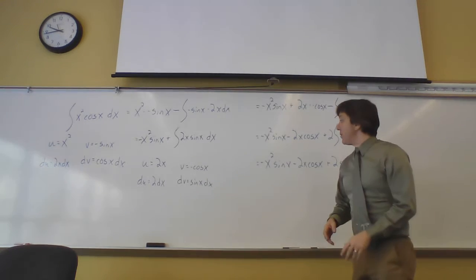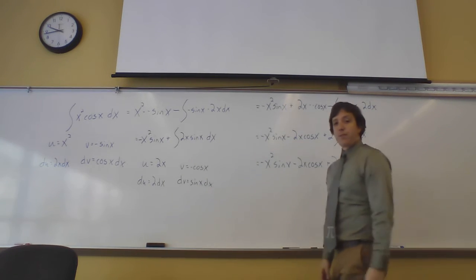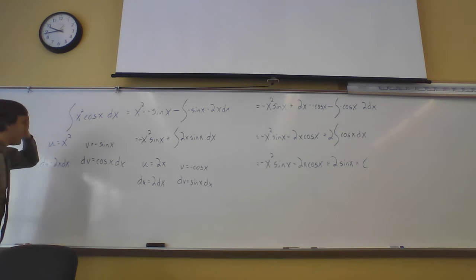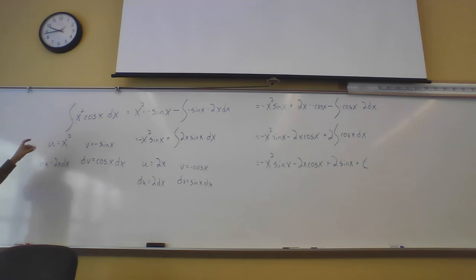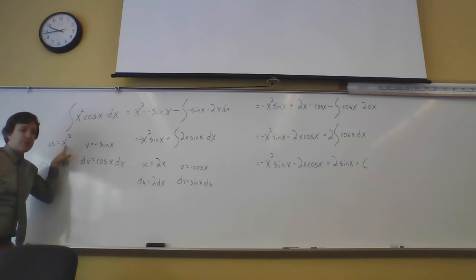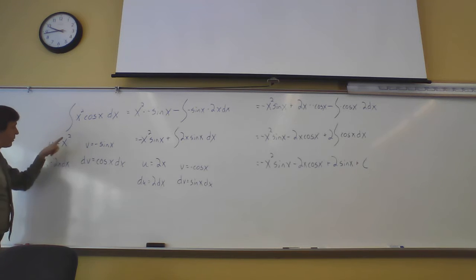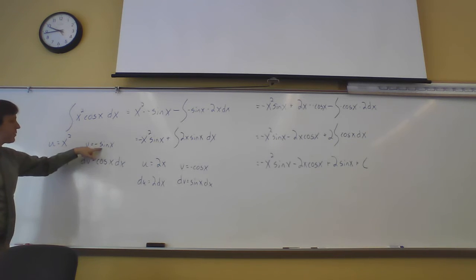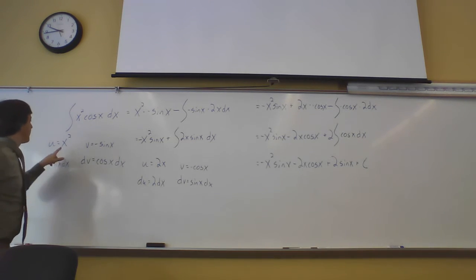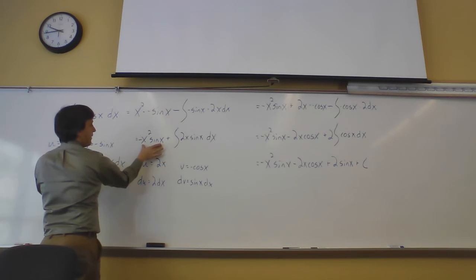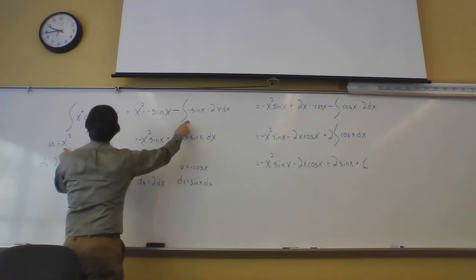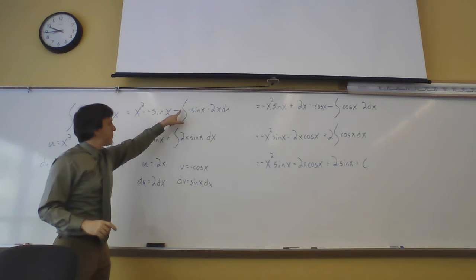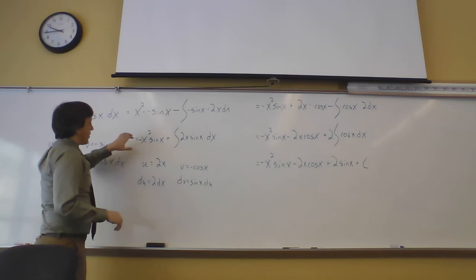This next one is a doozy — it took up basically the whole board. We want the anti-derivative of x² cos(x) dx. To make life simpler, I called u = x², so du = 2x dx — the power went down, which seems like a good thing. I called dv = cos(x) dx, whose anti-derivative gives v = sin(x). Piecing it together: u·v = x²·sin(x), minus the integral of sin(x)·2x dx.